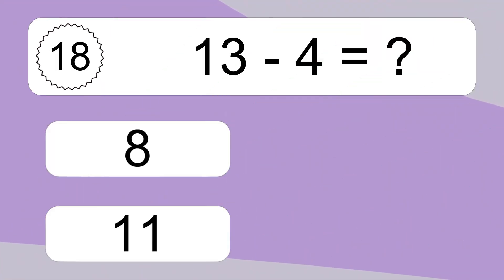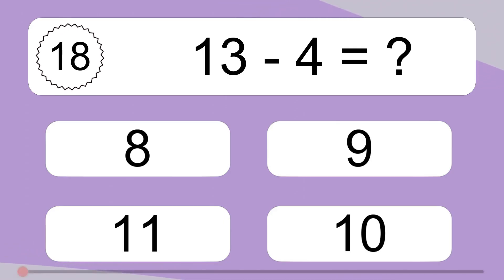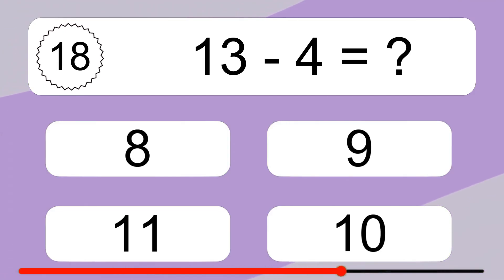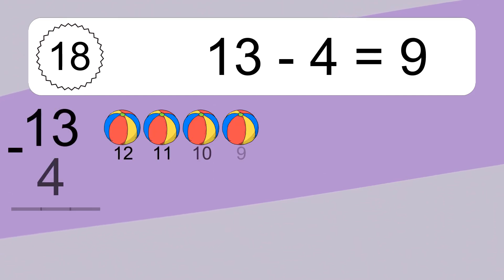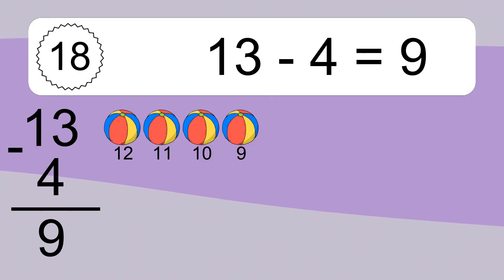13 minus 4 equals what? 13 minus 4 equals 9. Let's count it: 12, 11, 10, 9.